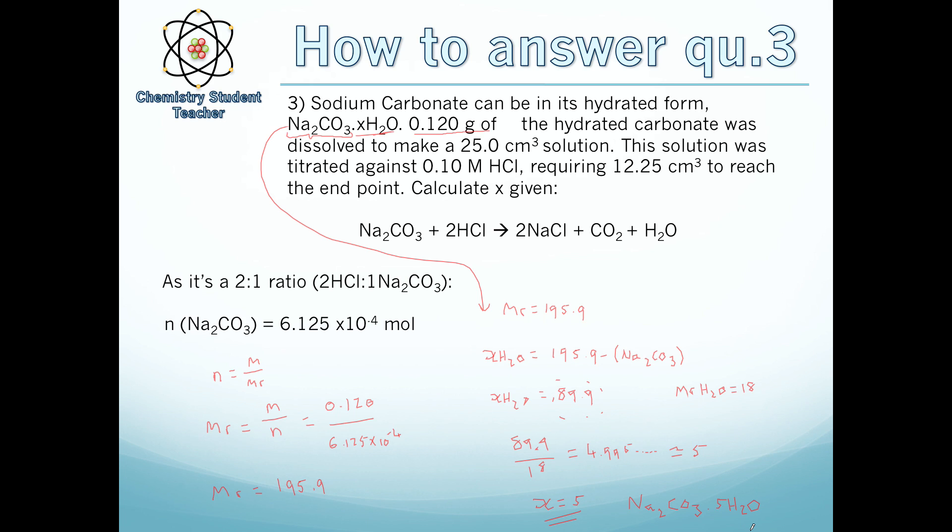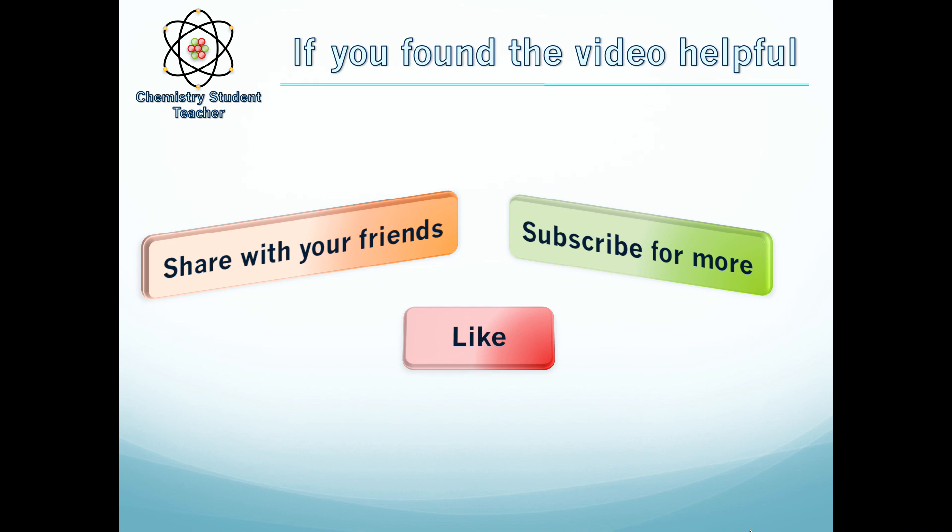That was question three. There may be a lot to process all in one go, so feel free to have another look back, slow it down, go a step at a time trying to understand it. It's a simple titration calculation like the first one - we're using ratios to get number of moles, except this time instead of trying to work out an unknown concentration, we combine the two formulae: n = CV/1000 and n = m/M. You can combine those together with the ratios of the reaction and work out the water of crystallization. I hope you found this video helpful. Please share it with your friends, subscribe for more, and please like the video below. Comment below if you want some more worked out examples of titration calculations or moles. Thank you.